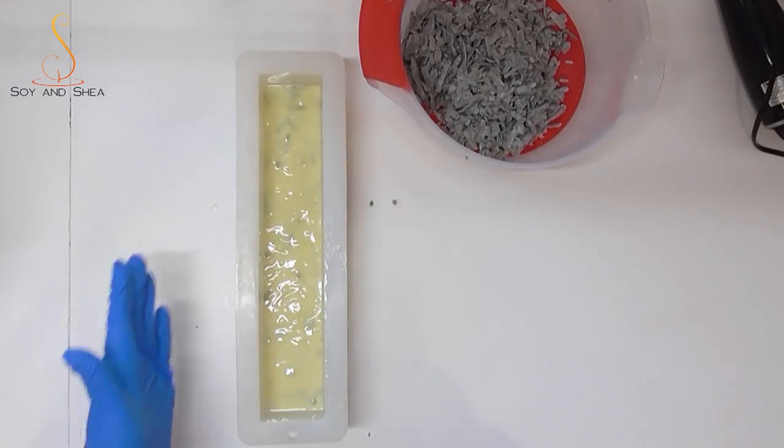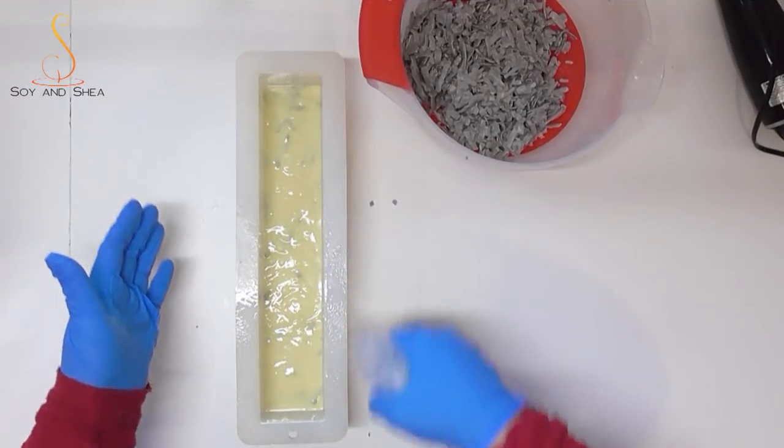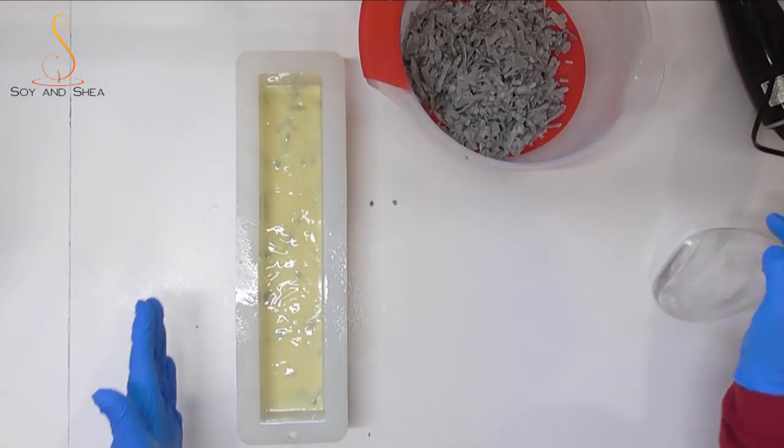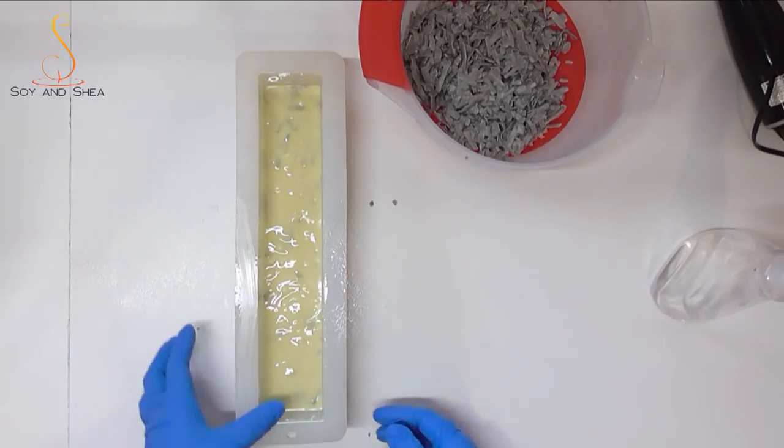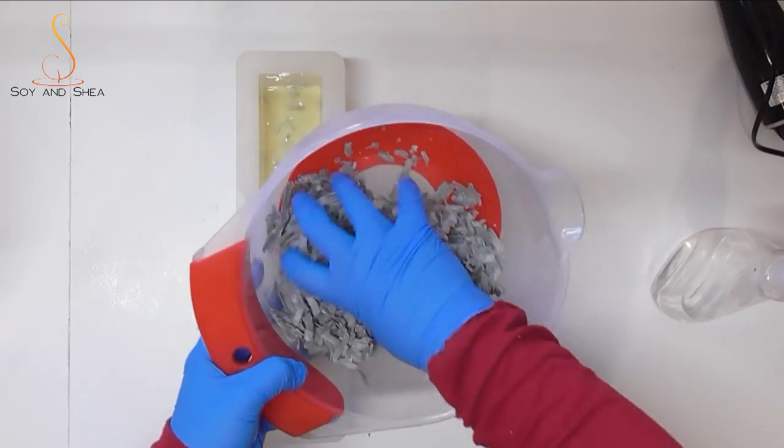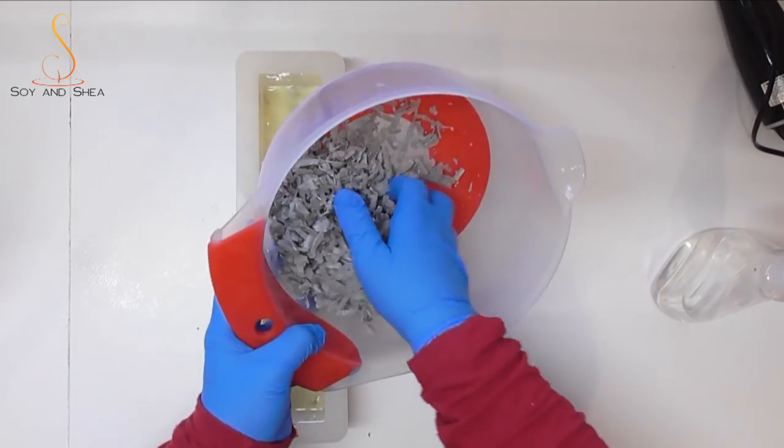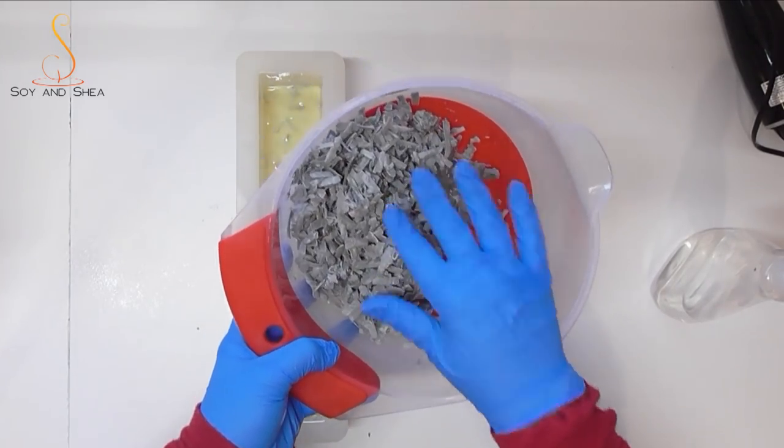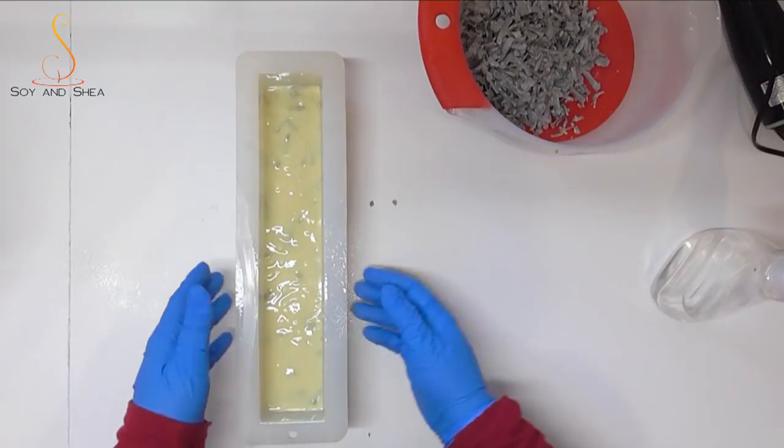Okay, so we're all scraped out and in here. I'm going to give this a quick spritz with some rubbing alcohol just to try and stop any of that soda ash that may form. The rest of these soap scraps that are left over, I do have some future plans for them, so I'm going to pop them into a bag ready for the next time I need to use. I'm going to leave this one sit and set up, and then I'll come back and chop it up.